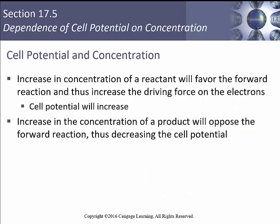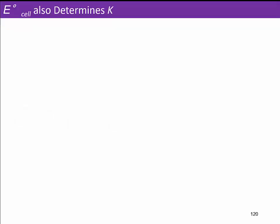Section 7.5: the dependence of cell potential on concentration. E_cell is also going to determine K. So there's a link between delta G and E, and there's also a link between G and K. So if we know E, we know K.